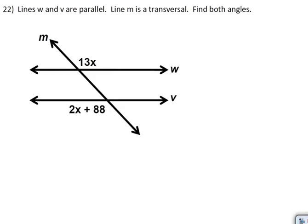W and V are parallel. Line M is a transversal. Find both angles. So that angle and that angle. So we can do the crisscross method here.